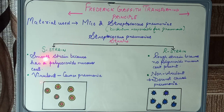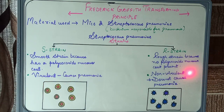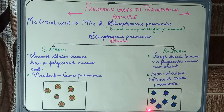S strain is the smooth strain because it has a polysaccharide mucus coat. As you can see in the diagram, the S strain has a polysaccharide mucus coat on it. On the other hand, R strain does not have a polysaccharide mucus coat, so it is rough in shape, as shown in the diagram.